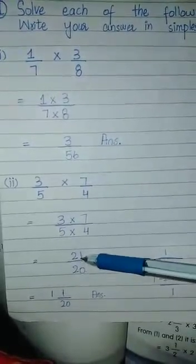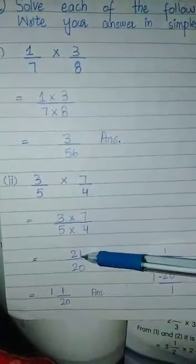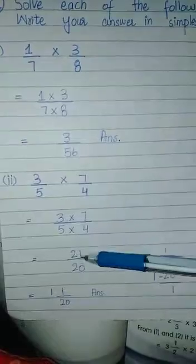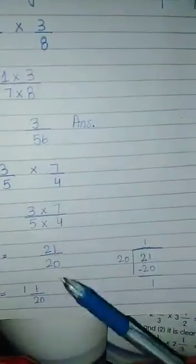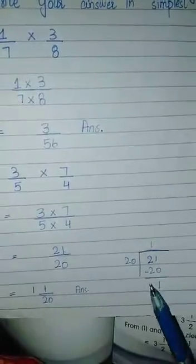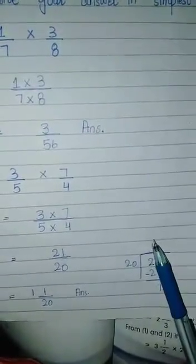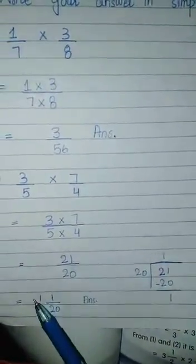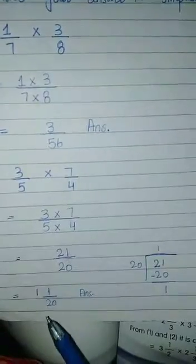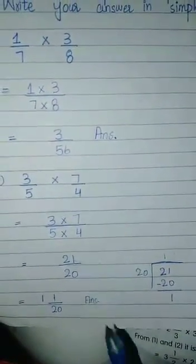Now, 21 by 20 is an improper fraction because the numerator is larger than the denominator. So we divide: 21 divided by 20 — 20 goes once, subtract, remainder is 1. So this becomes 1 whole 1 by 20 as a mixed fraction. That is our answer.